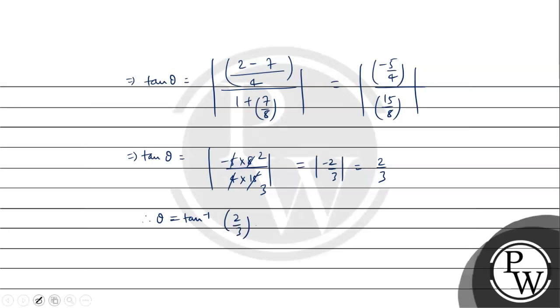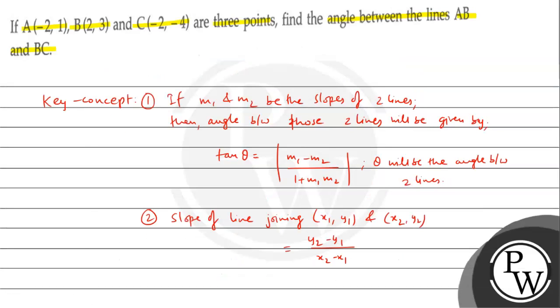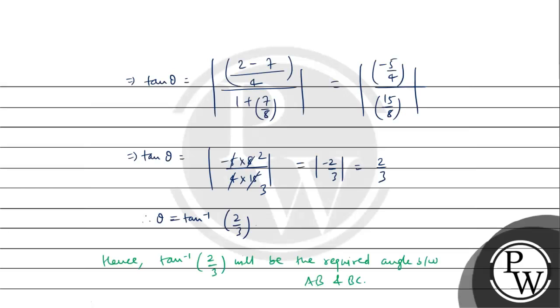This is our answer. Hence, tan inverse (2/3) will be the required angle between AB and BC. What is our answer? Tan inverse 2 upon 3. Tan inverse 2 upon 3 will be your final answer. I hope you understood it well. Best of luck.